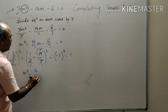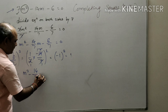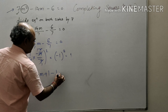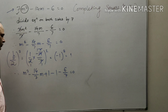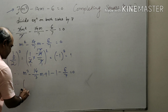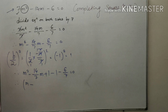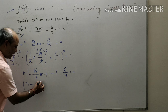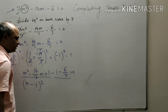Calculating: 2×1=2, 2×7=14. So 1/2 × (-14/7) = -14/14 = -1. And (-1)² = +1. So (b/2)² = 1. Now we are going to add and subtract this term, which is 1, to both sides of the equation.